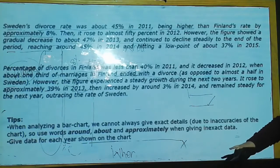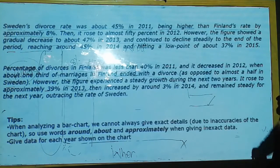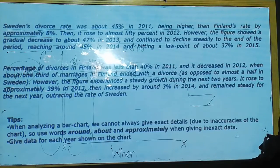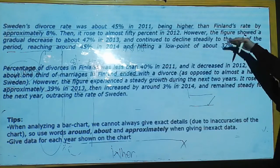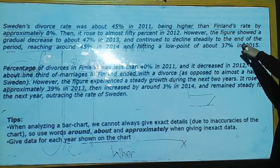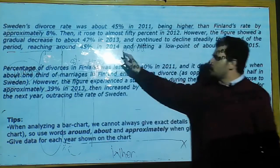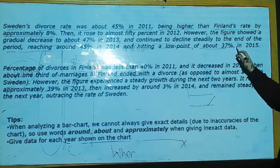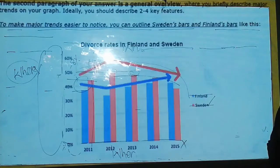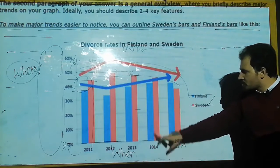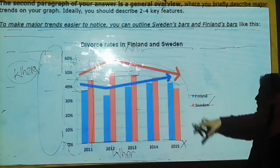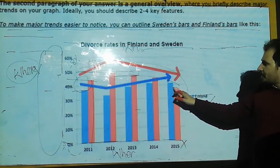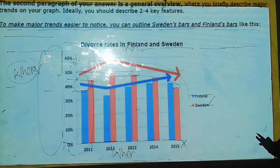For the last part, it continued to decline steadily to the end of that period, reaching around 45% in 2014 and hitting a low point of about 37% in 2015. This is my first supporting paragraph — in 2014 it reaches almost 45%, and it decreased further in 2015 to the lowest point of approximately 37%.